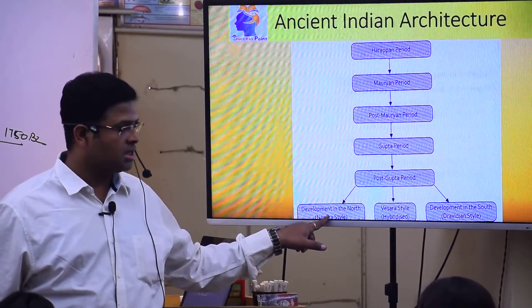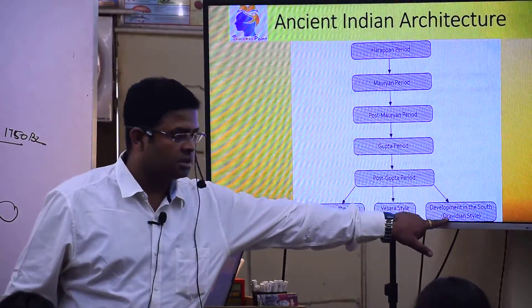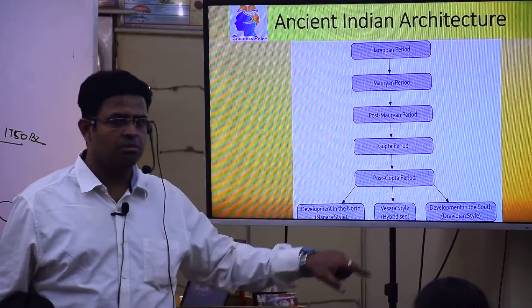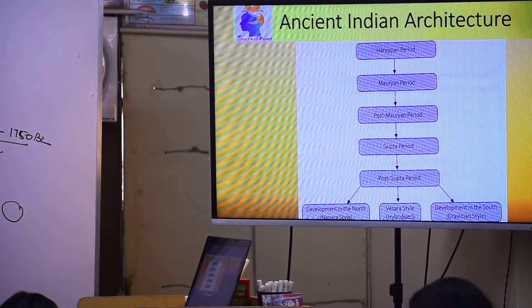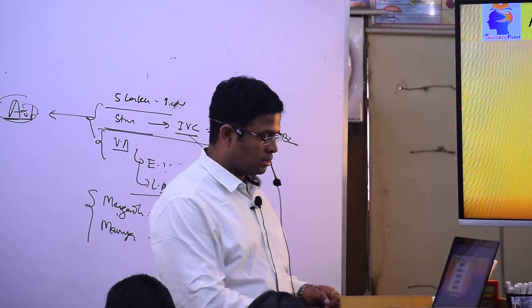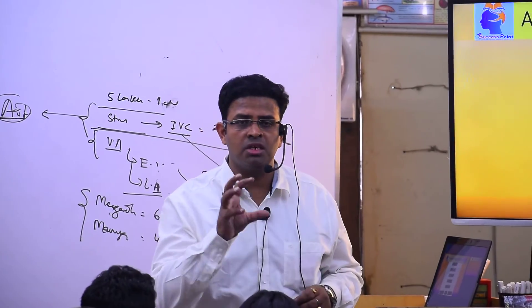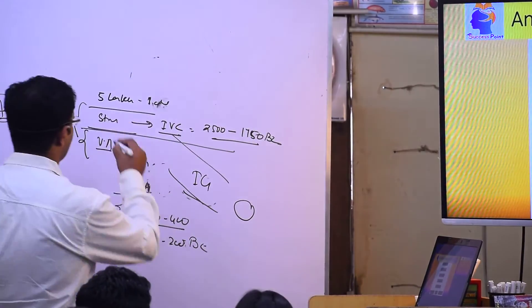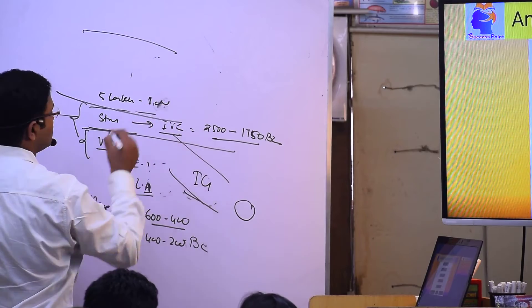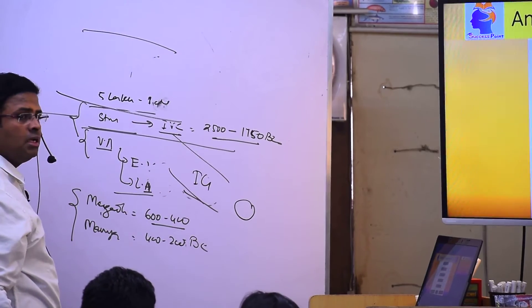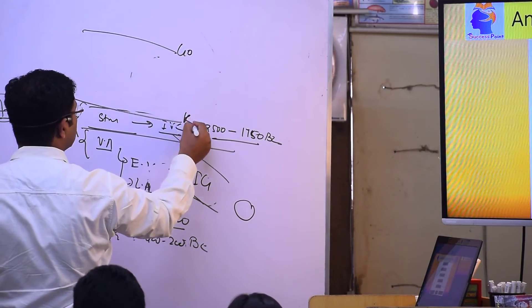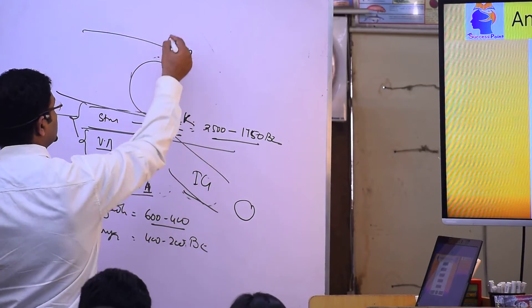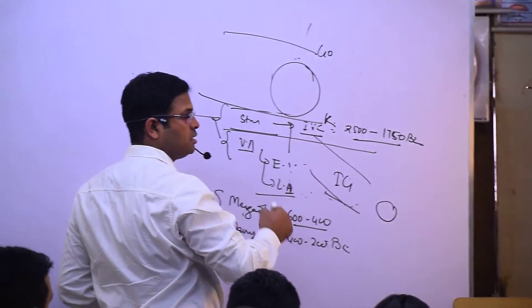We have to see Nagara style. In between what? Hybridized form, mixture of it. Yes, Vesara style. And famous only one reason is there, it is lying between Godavari and Krishna. So Vesara style lies between Godavari and Krishna, and it is also junction of Nagara and Dravida.